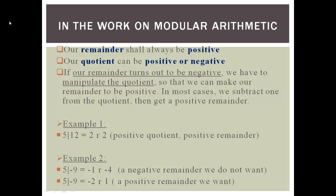In all modular arithmetic work, our remainder shall always be made positive. The quotient can be either positive or negative. If the remainder turns out to be negative, we must manipulate the quotient to make the remainder positive. In most cases, all we need to do is subtract one from the quotient to get a positive remainder.